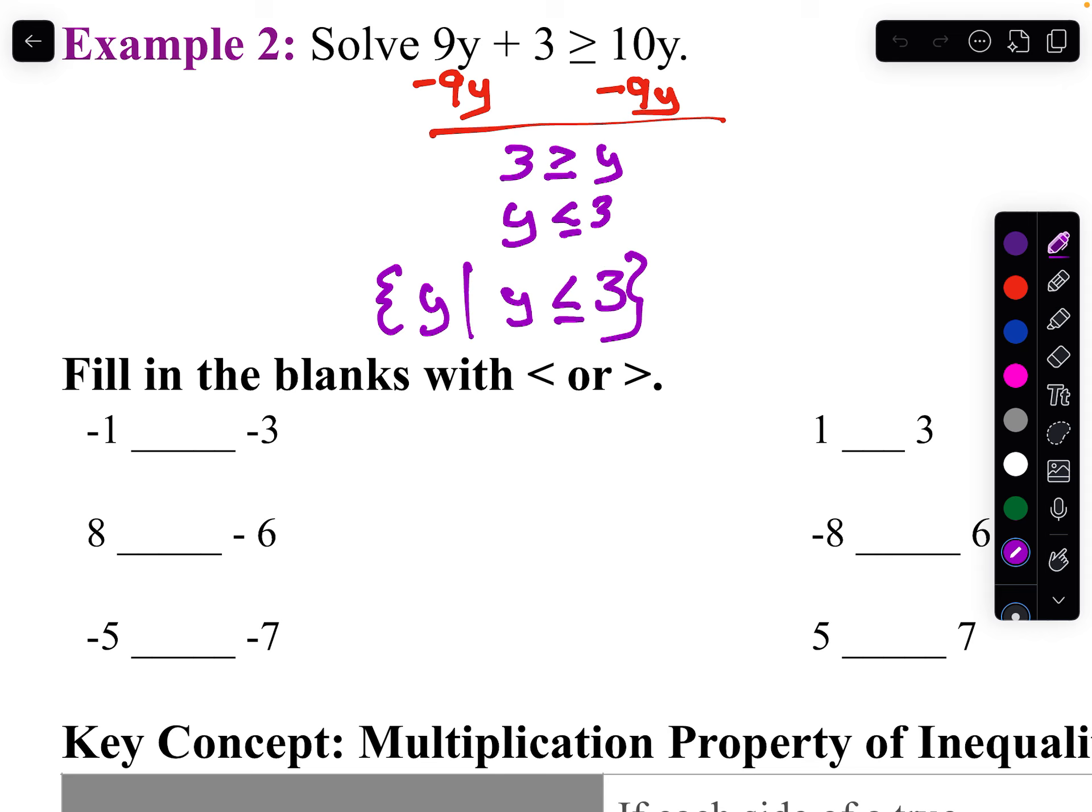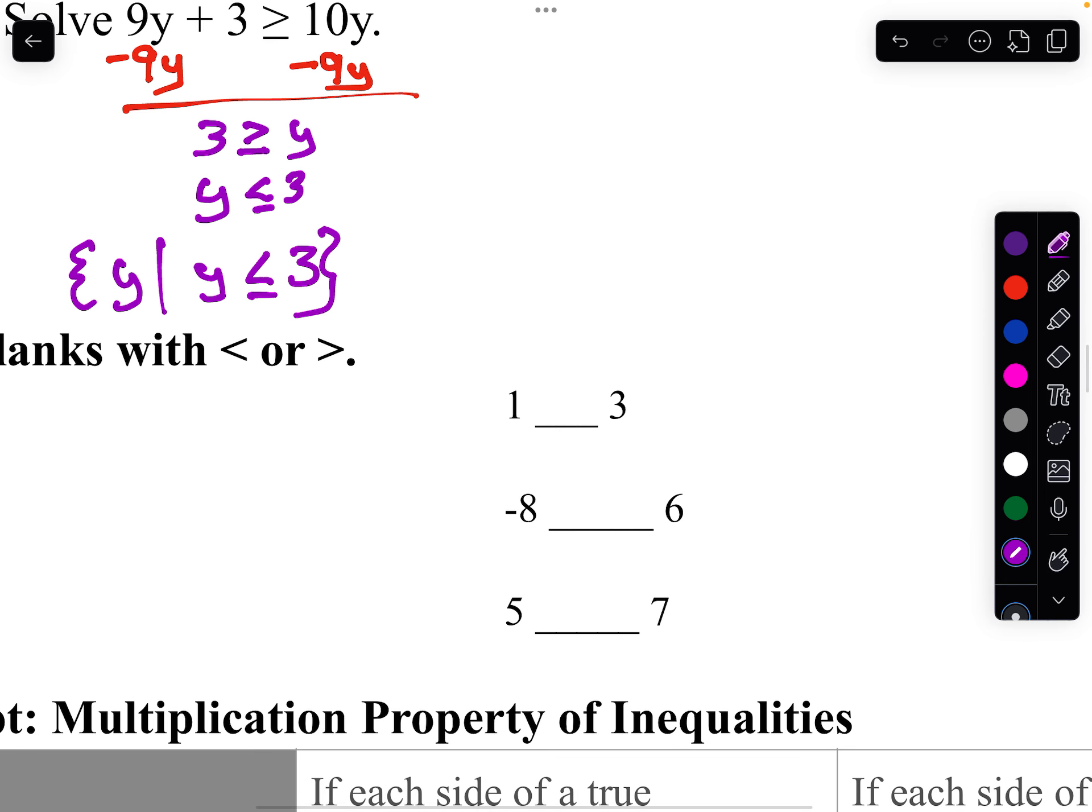So, negative 1 is to the right of negative 3, so it's greater than. 8 is to the right of negative 6 on the number line, so it's greater than. Negative 5 is to the right of negative 7 on the number line, so it's greater than. 1 is to the left of 3 in the number line, so it's less than. Negative 8 is to the left, so it's less than. And 5 is to the left.